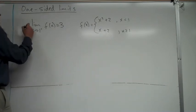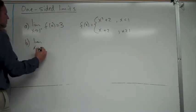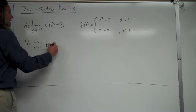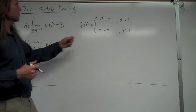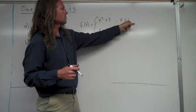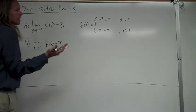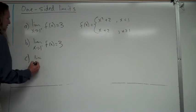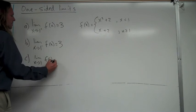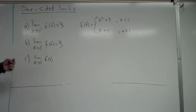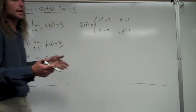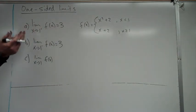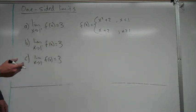Pretty straightforward. For the limit as x approaches 1 from the left, values are smaller than 1, so I use x squared plus 2. Plugging 1 in also gives 3. If asked for the two-sided limit as x approaches 1, I check both sides: left gives 3, right gives 3 — they agree, so the limit is 3. If both sides gave different values, the limit would not exist.